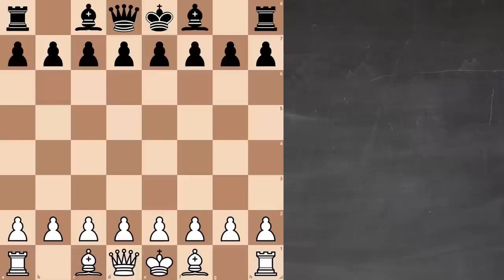With retrograde analysis problems, we're mostly concerned about what's possible and what's not possible. We like to make observations about what's certain. We're sort of like detectives, trying to figure out past events.